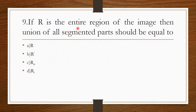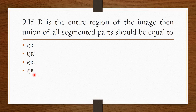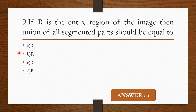Question 8: If R is the entire region of the image, then the union of all segmented parts should be equal to — Option A: R. Option B: R dash. Option C: R N. Option D: R I. The correct answer is Option A — capital R.